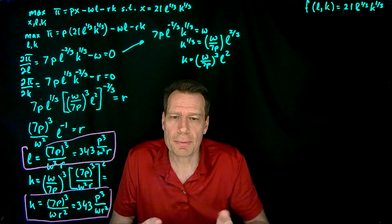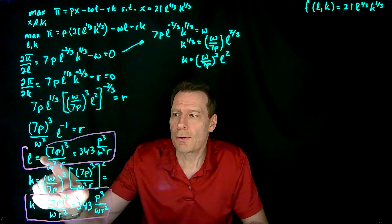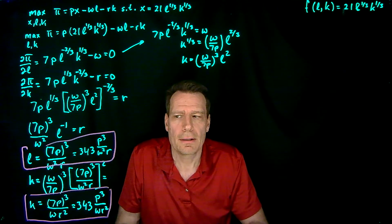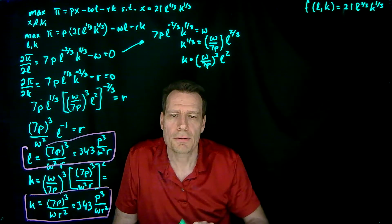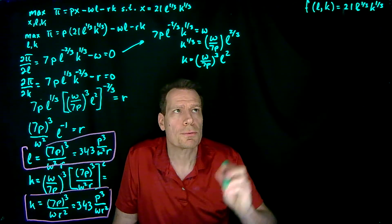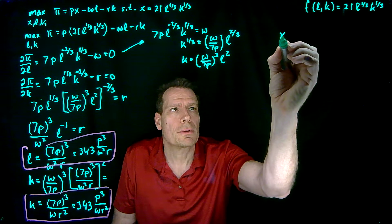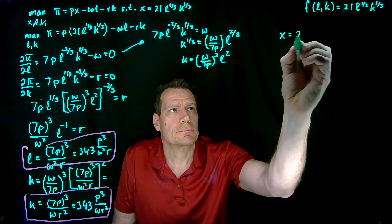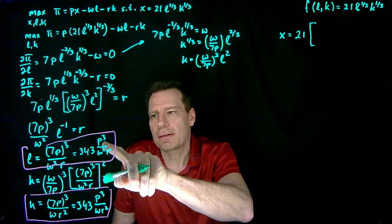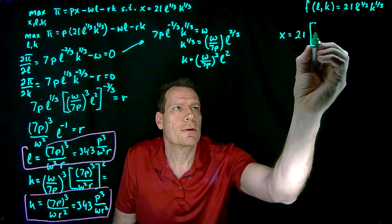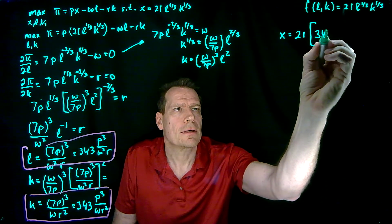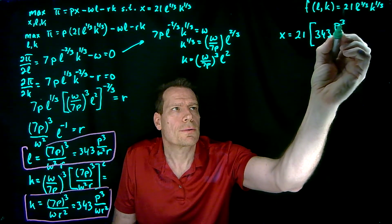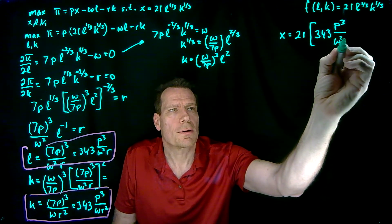Finally, we can figure out the output supply function, because we know how much labor and capital you're going to hire for any set of prices. We just put those expressions into the production function to figure out how much output you'll produce. So output equals 21 times the labor term: 343 times P to the third over W squared R.